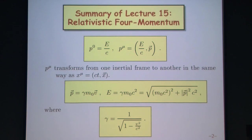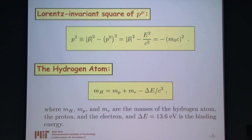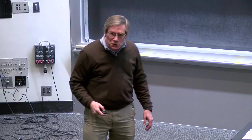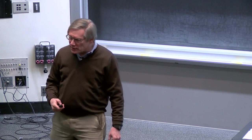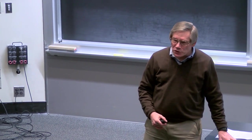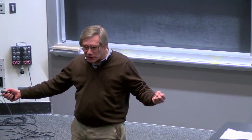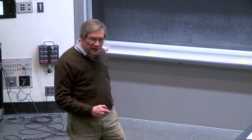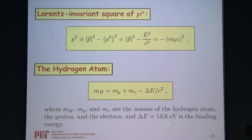As an example of energy exchanges, we considered the hydrogen atom. Because energy and mass are equivalent, the hydrogen atom has a little bit less energy than an isolated proton plus an isolated electron. When you bring them together, there's a binding energy delta E of 13.6 electron volts for the ground state of hydrogen. So the mass of a hydrogen atom is not the sum of the two masses — it has a correction because we've taken out a little binding energy, and hence a little mass.